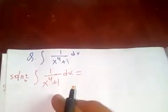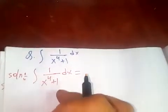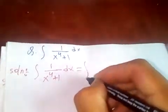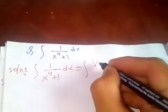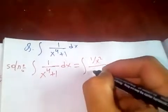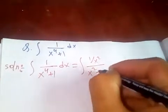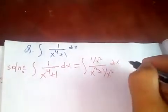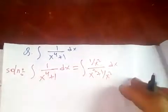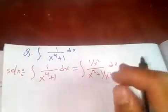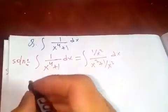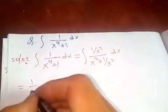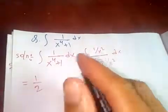Divide both numerator and denominator by x squared. It will be 1 over x squared, divided by x squared plus 1 over x squared, dx.